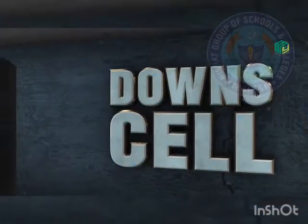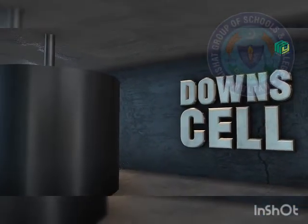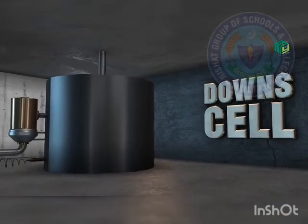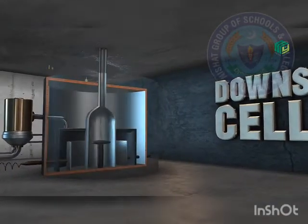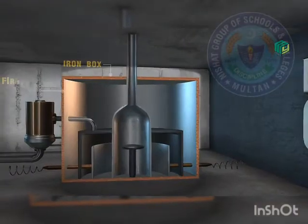So here is the animation of Downs cells. The Downs cell is a circular furnace. Just see a circular furnace that is made up of iron box and fire bricks.